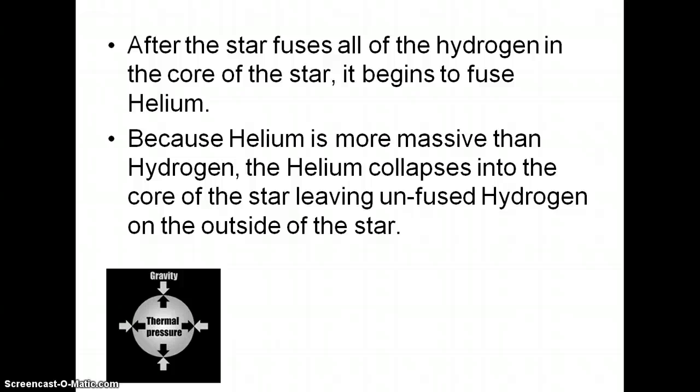After the star fuses all of the hydrogen inside of it, it's going to start to fuse helium. Because helium is more massive than hydrogen — it has more protons and neutrons — eventually you get enough helium and it will collapse into the core of the star, leaving the unfused hydrogen on the outside.